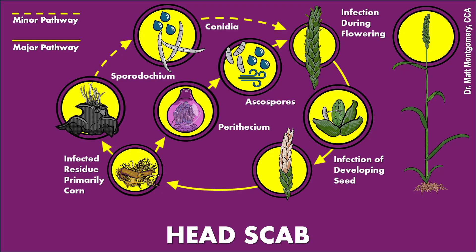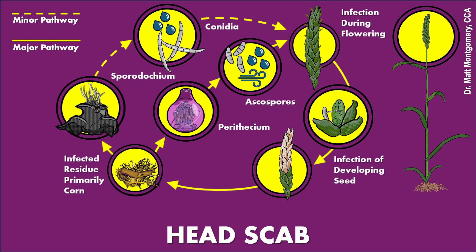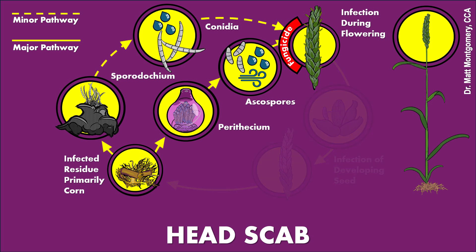Now, fungicide applications make sense. The timing of them — usually around the heading period, when we see the plant just beginning to flower — makes sense because that's the critical point in the life cycle. If you can stop the spore from ever sending out and getting that infection peg to the developing kernel, you've halted the disease in its tracks. That's why we apply fungicides at heading time: to protect the plant as it goes into the flowering period, forming a chemical barrier that keeps those little spores from sending out the infection pegs that infect the kernel itself.